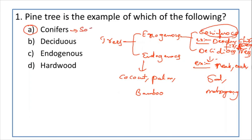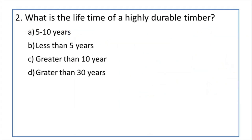Wood obtained from coniferous trees is soft in nature — coniferous gives softwood. Deciduous trees give hardwood. So pine tree is an example of coniferous trees. The next question: what is the lifetime of a highly durable timber?